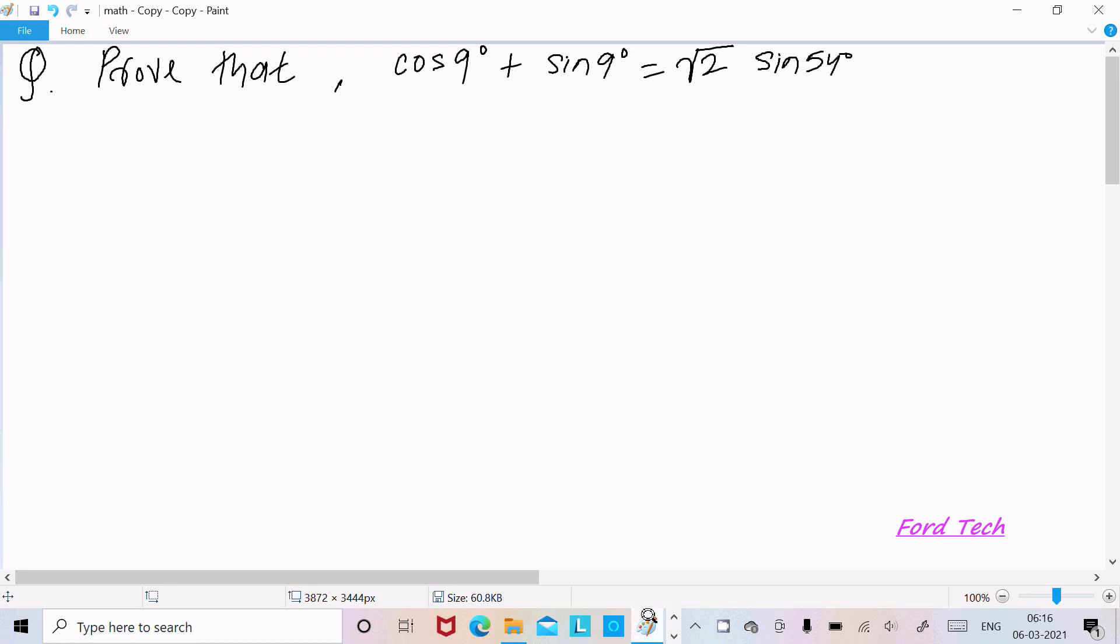Hello friend, in this video lecture I am going to prove that cos 9° + sin 9° = √2 sin 54°. So let's see the answer. I am going to take the LHS, left hand side.